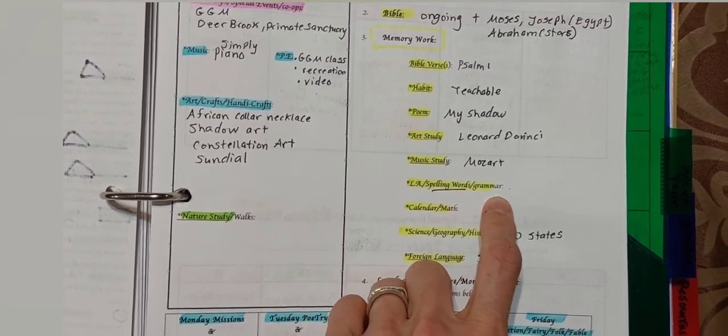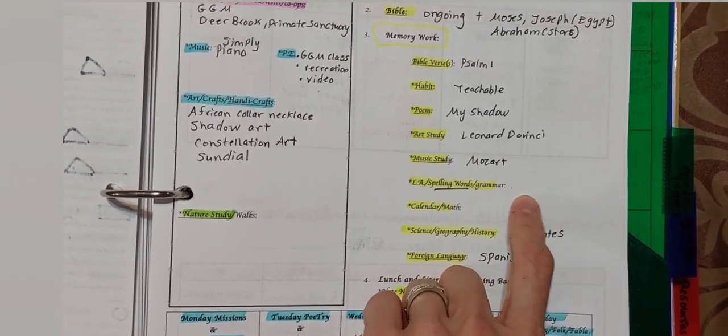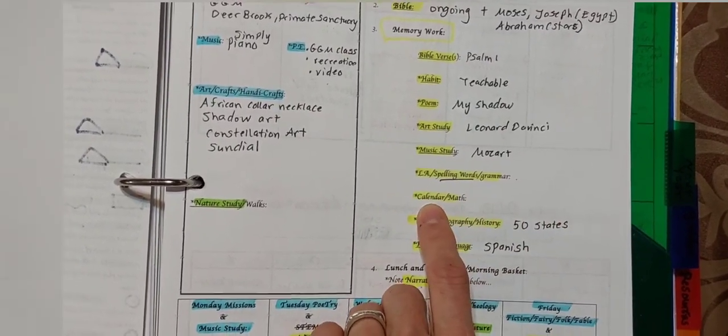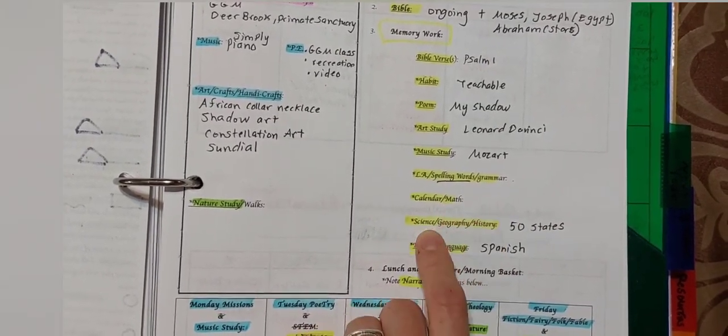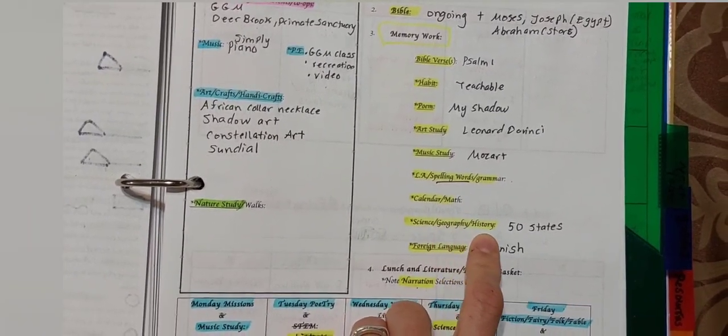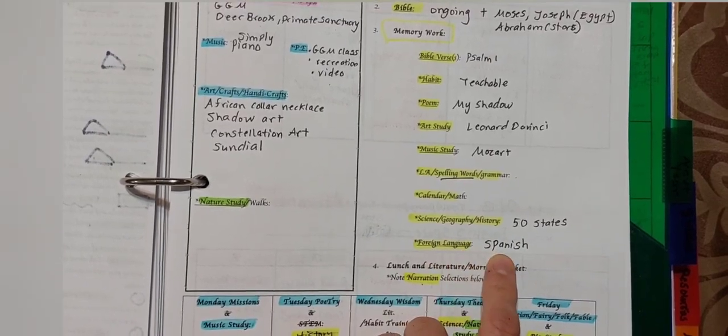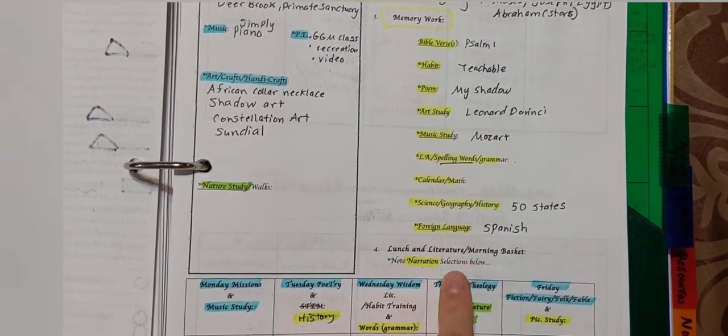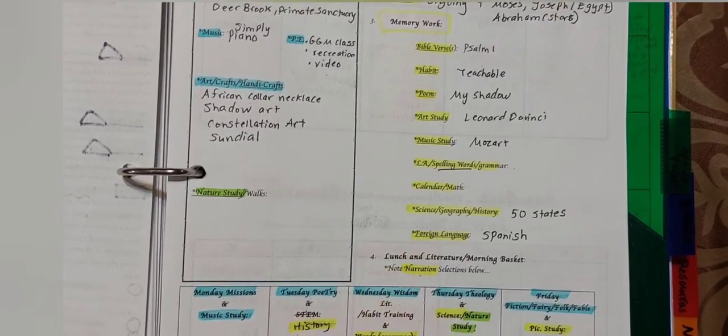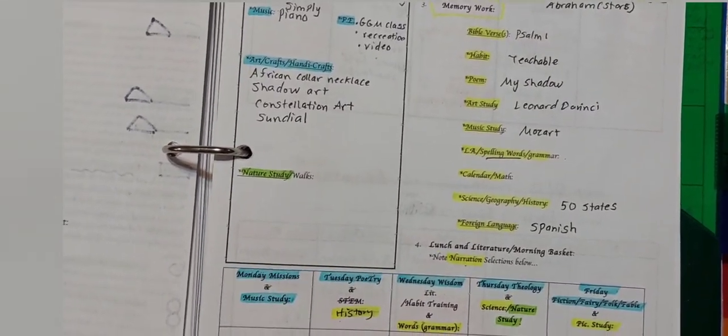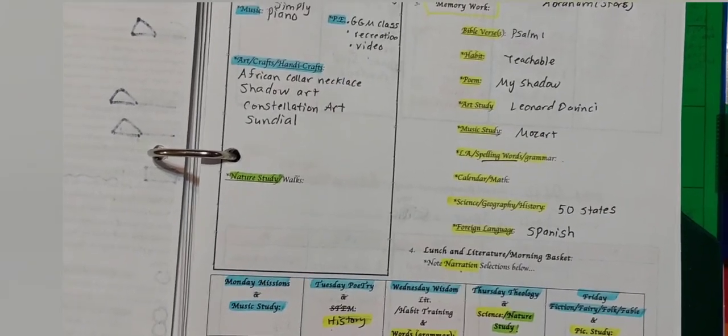Then for language arts, the only thing I put on my board is our spelling words that I pick based on some lists I have. We do calendar time, and for our memory work, we're learning the 50 states, identifying those in a map. Foreign language is Spanish. We tie those in with calendar time very lightly, like learning Wednesdays, holiday seasons, counting, and maybe pick one other category. We're pretty light with it right now.